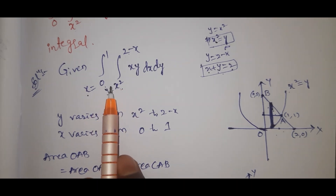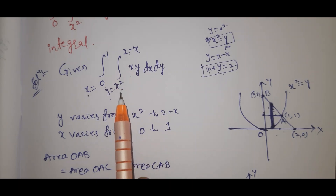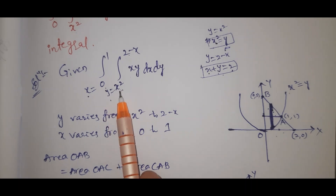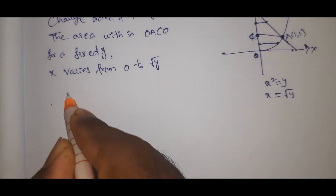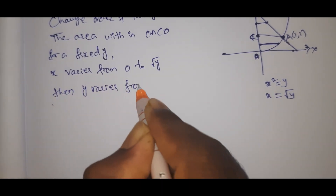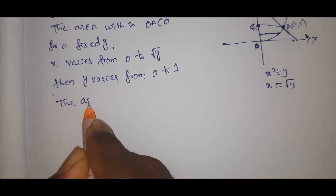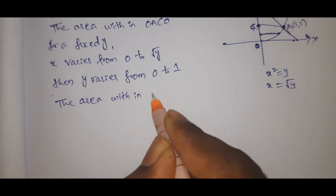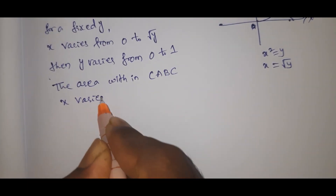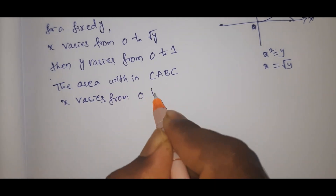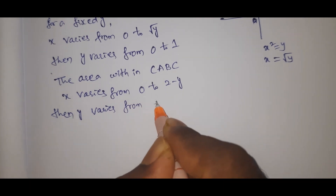We divide into two areas and change the limits accordingly. For Region 1 (OACO): y varies from 0 to 1. For Region 2 (CABC), for a fixed y, x varies from 0 to 2 minus y, and y varies from 1 to 2.